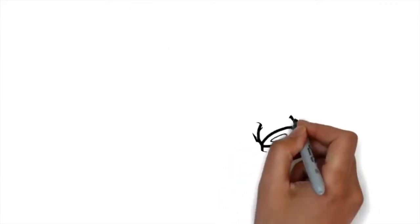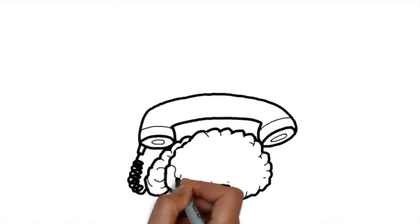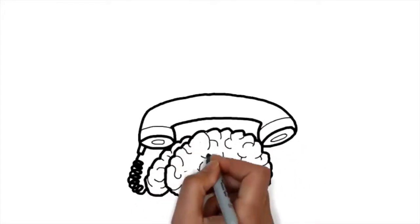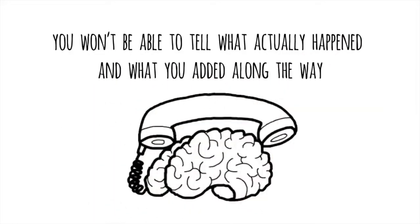In other words, your memory is like playing telephone. Every time you re-remember something, it changes a little bit more. Eventually, you won't be able to tell what actually happened and what you added along the way.